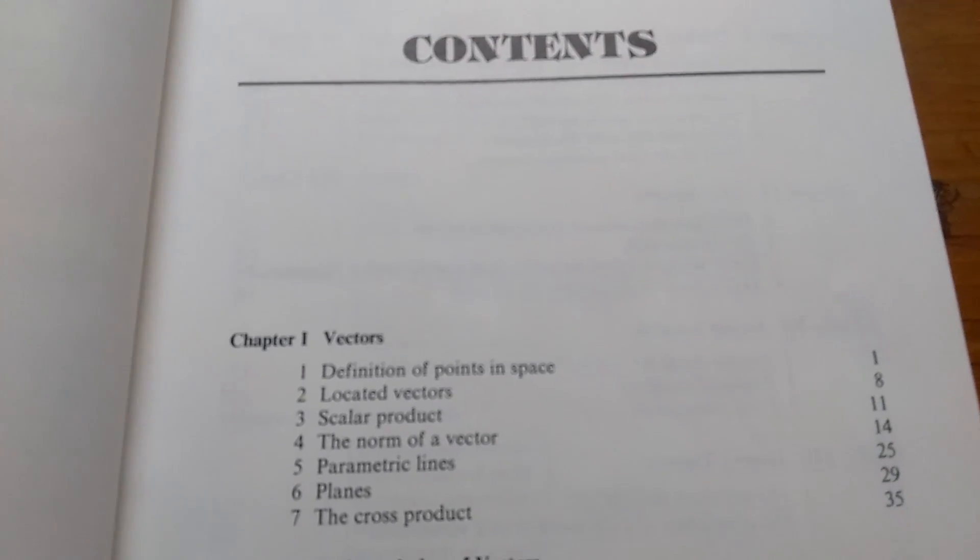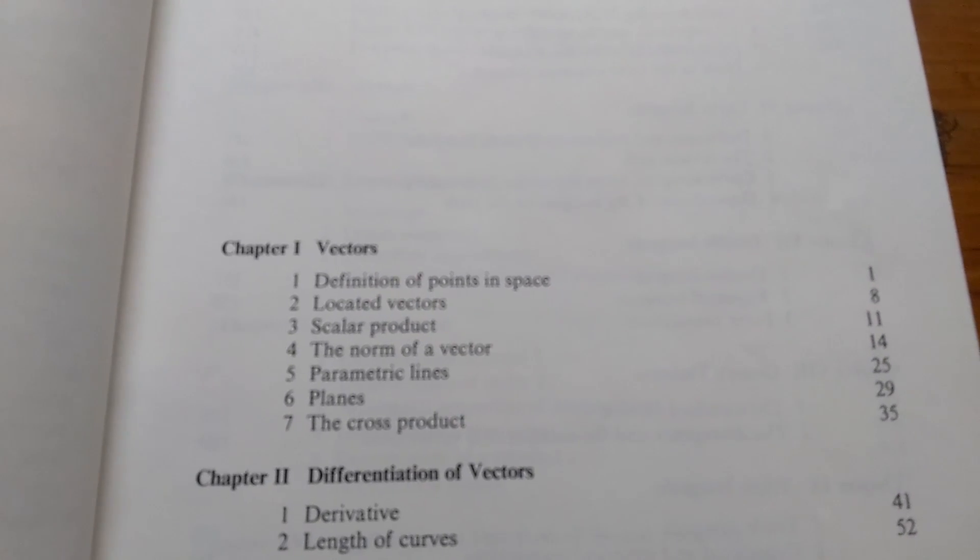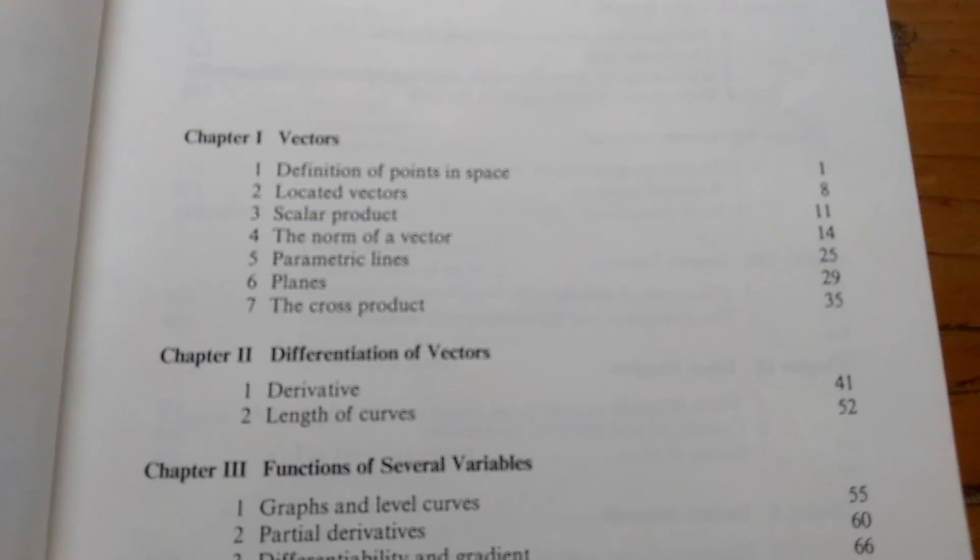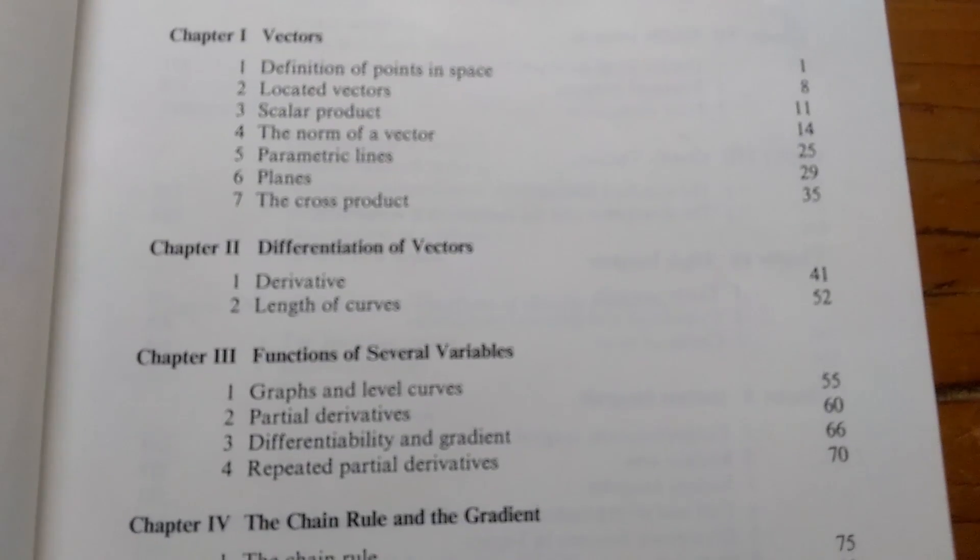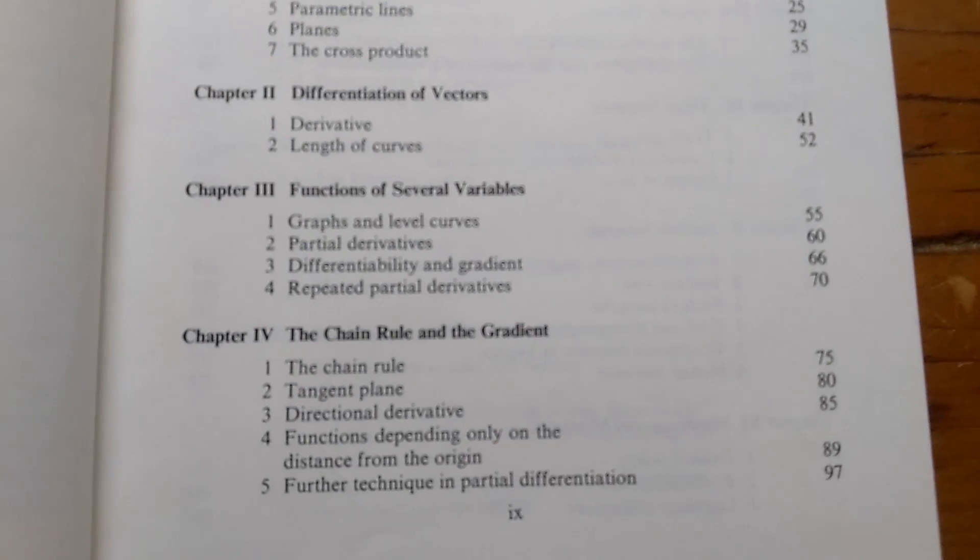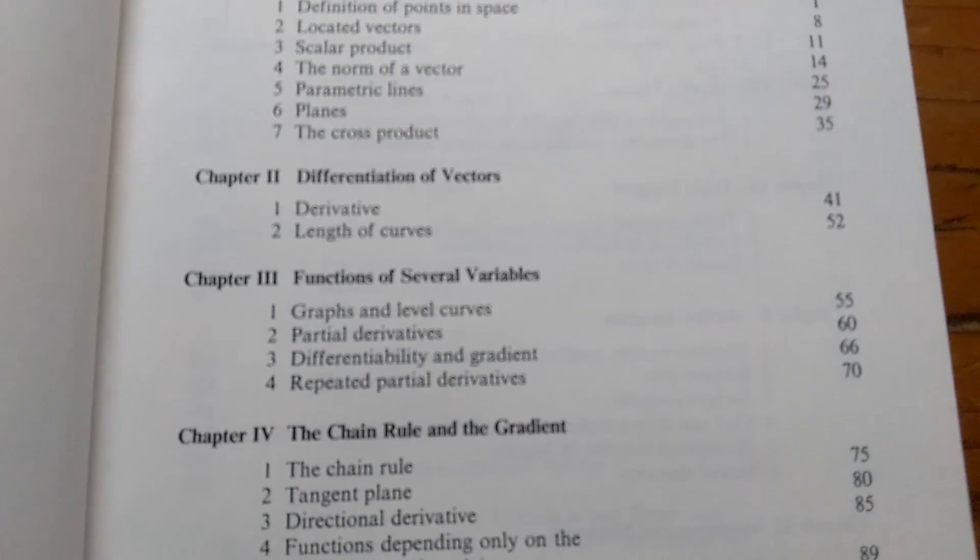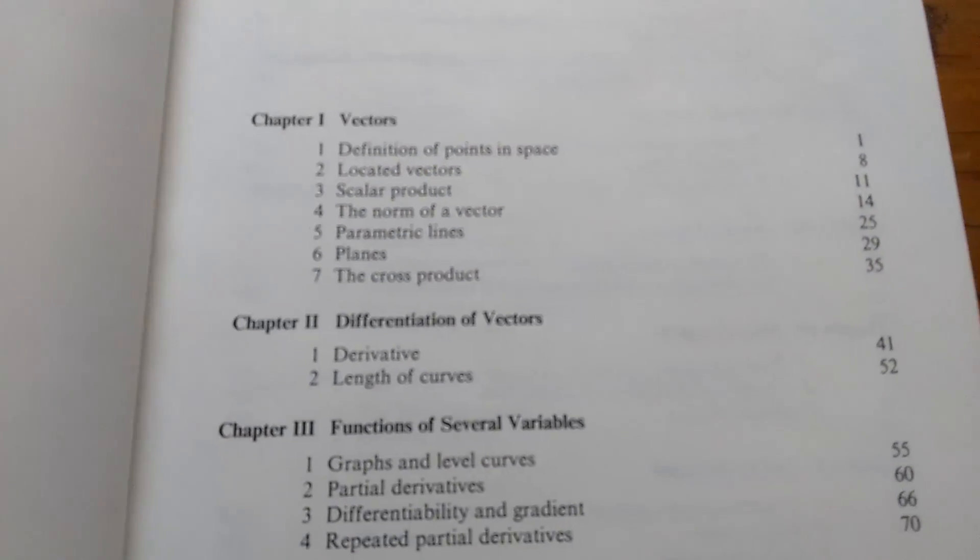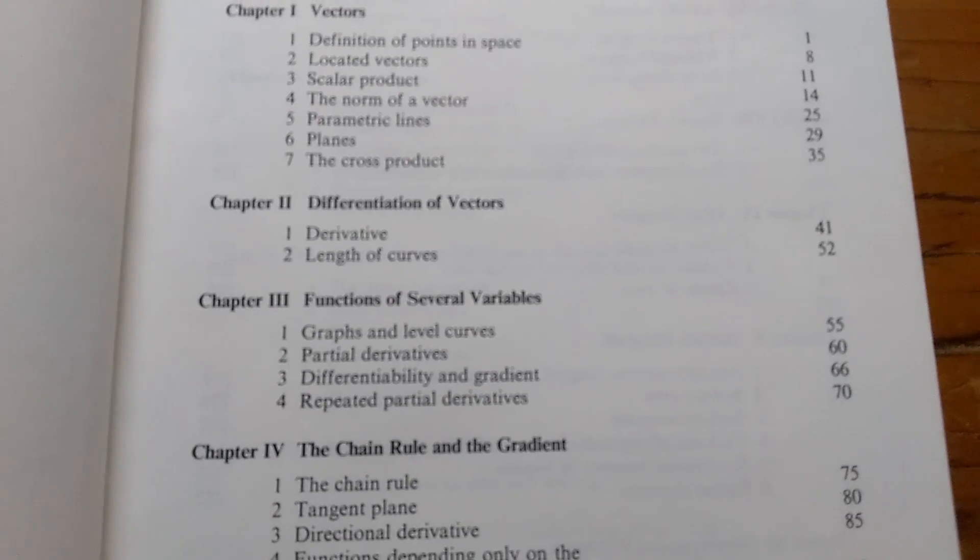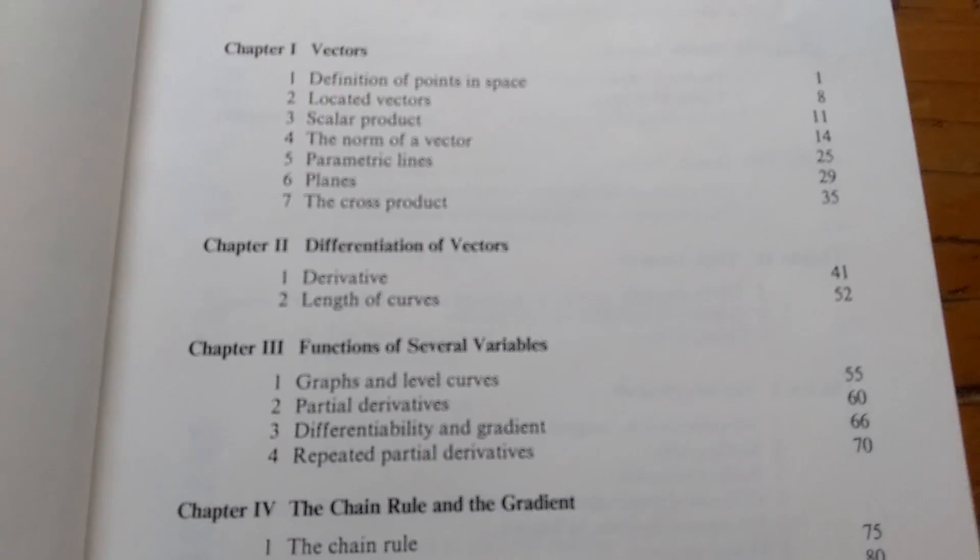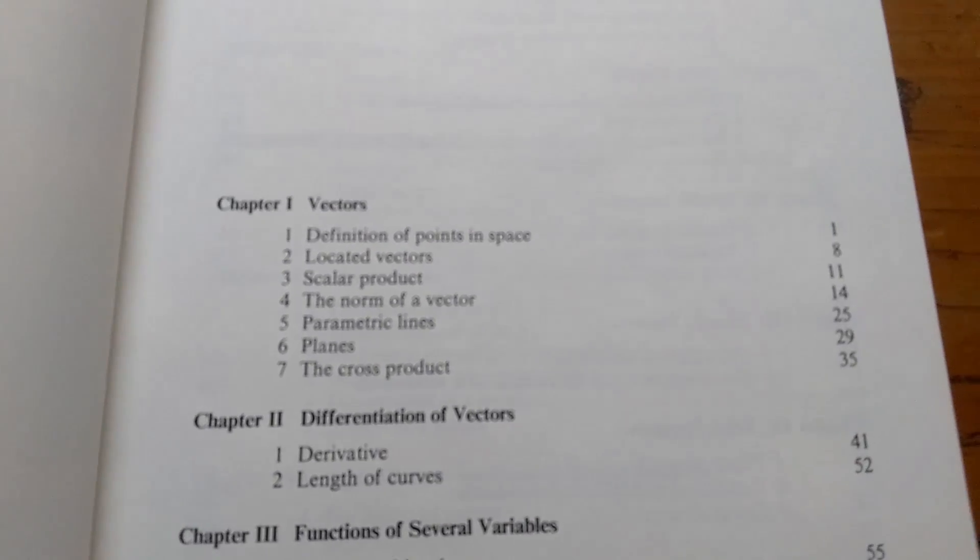So this is the table of contents. He starts off with vectors, then he goes on to differentiation of vectors, then he talks about functions of several variables, then the chain rule, and the all-important gradient. Lang does a good job explaining all of these sections. I have read various sections and it's written very differently than your newer calculus books. Is it better? Is it worse? I'm not sure. It's just different.